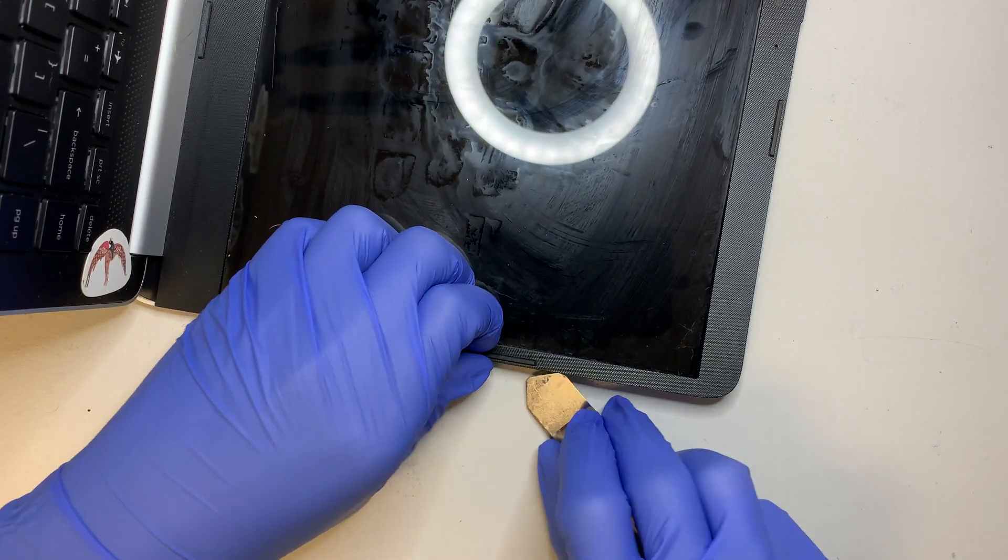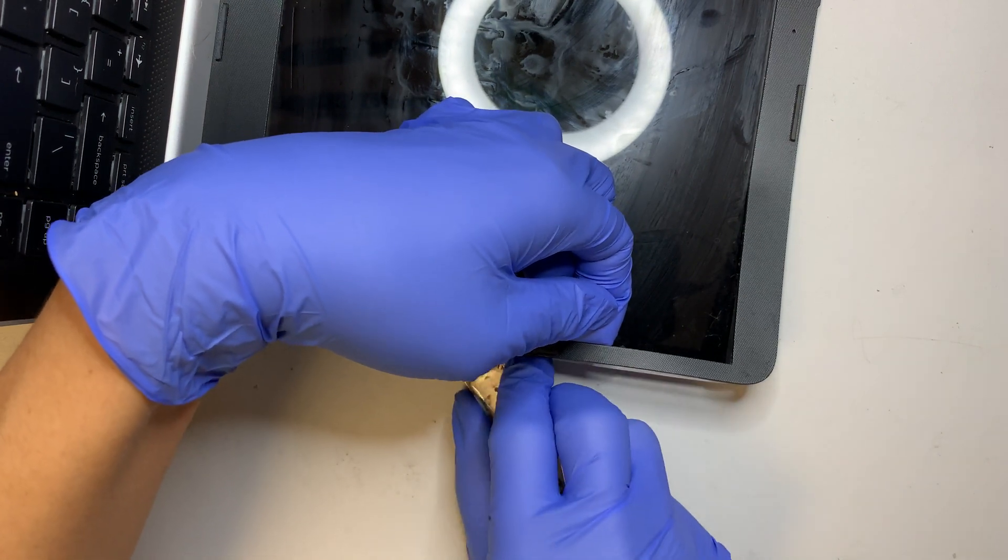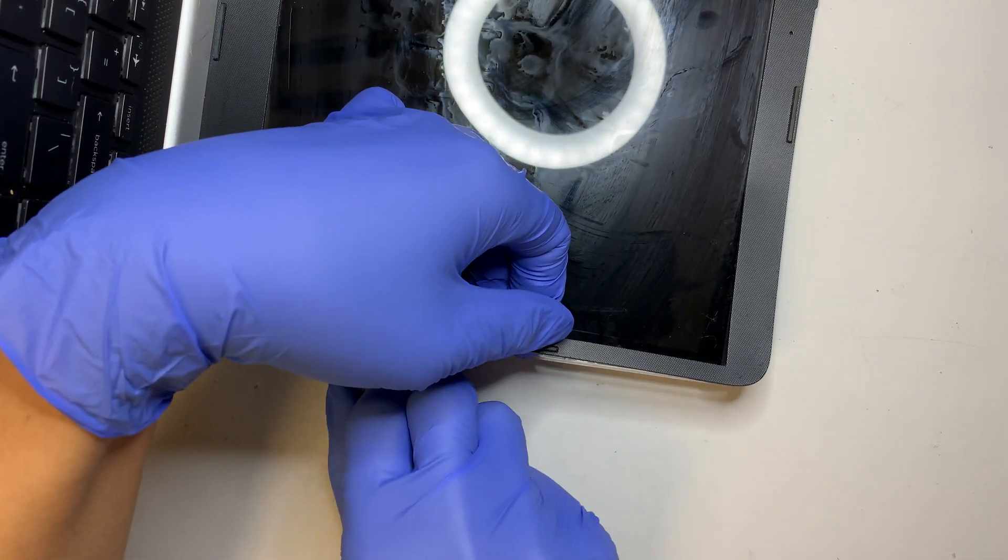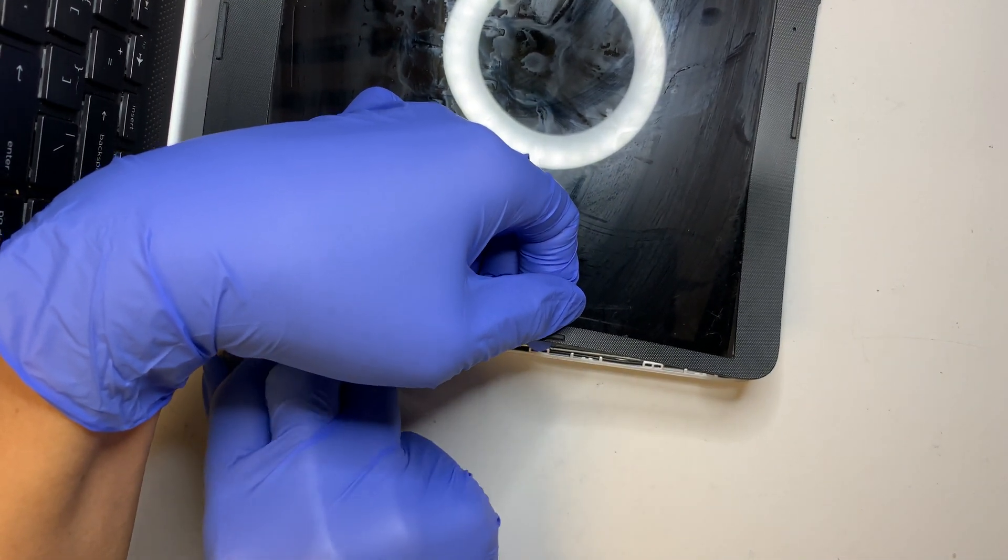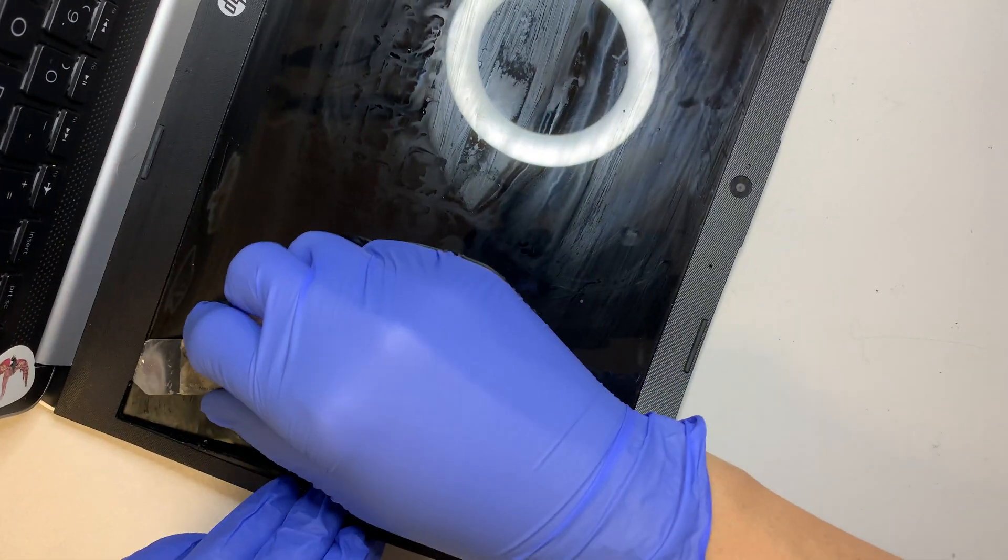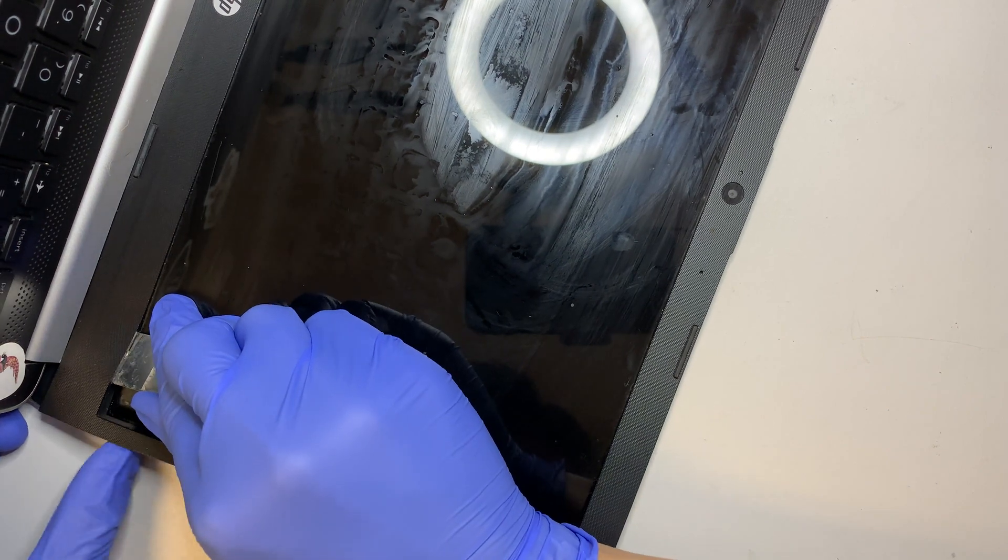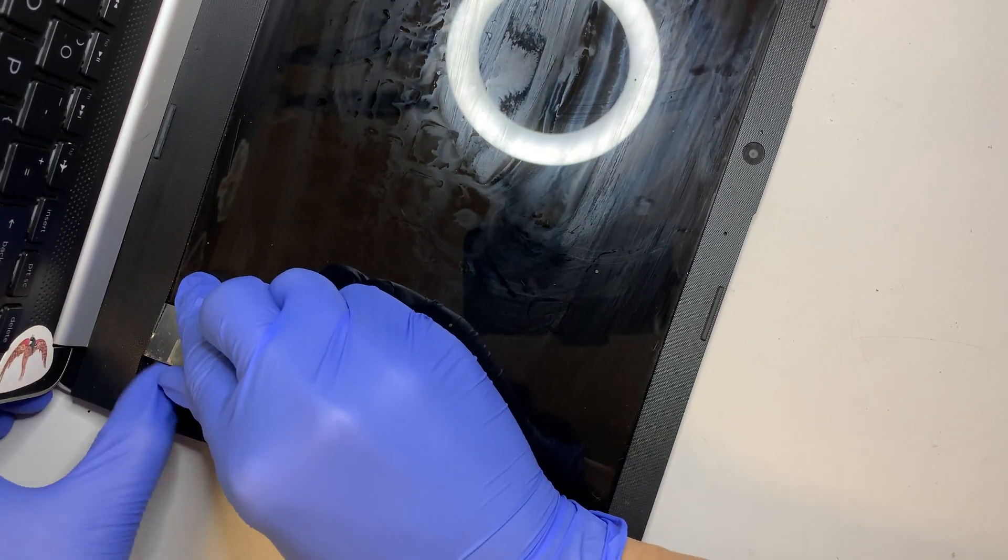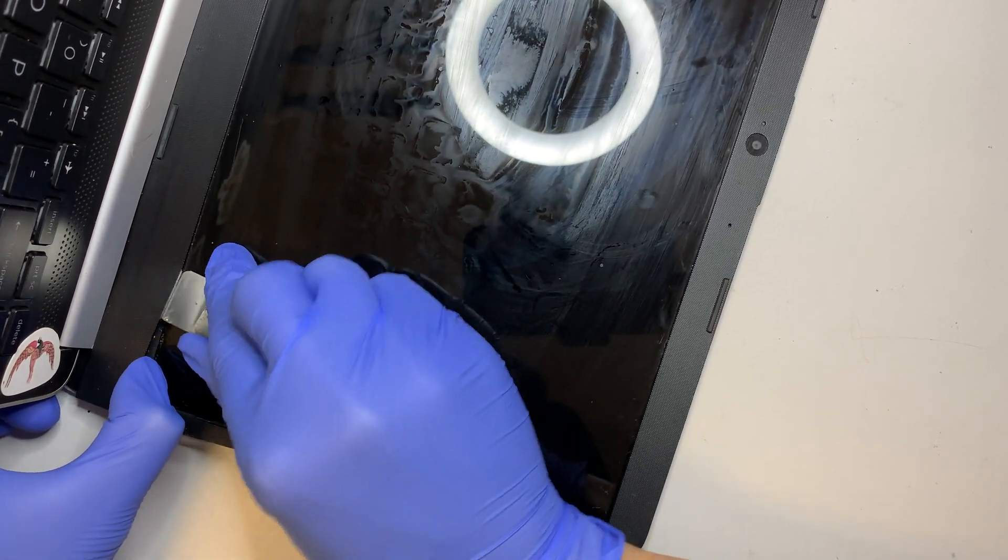Walk your way around it slowly, separate the adhesive glue and remove the bezel. What I have here is a prying tool, a metal one, and I'm just going to walk my way around it slowly.